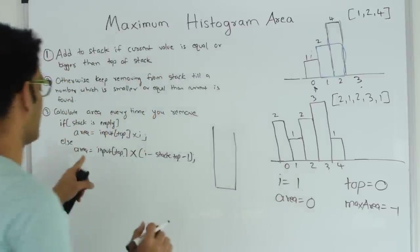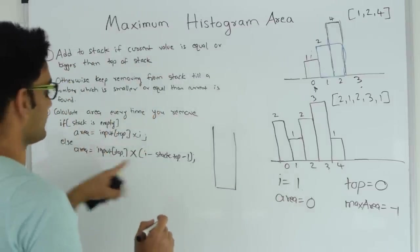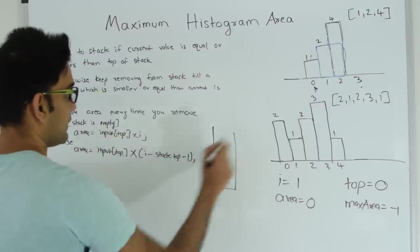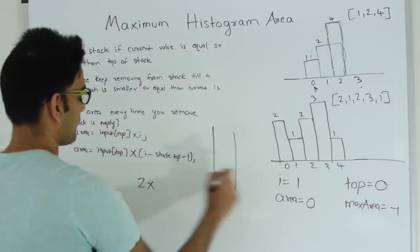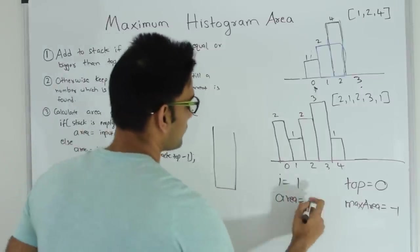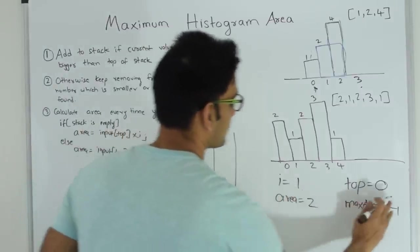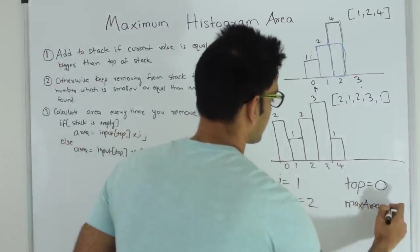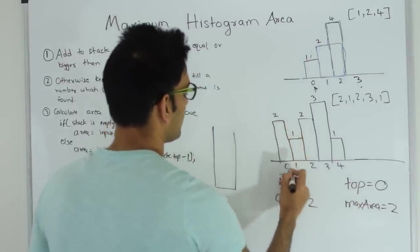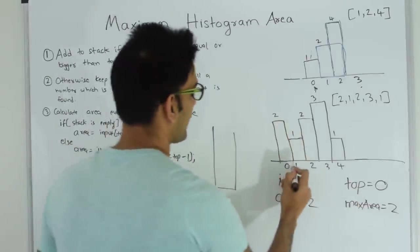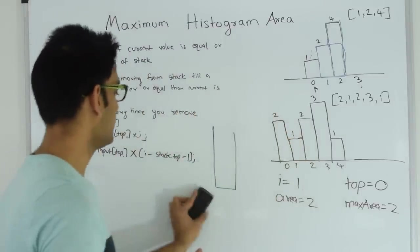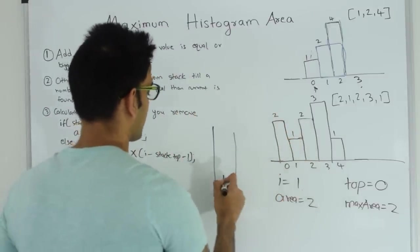Since the stack is empty, area = input[top] × i = 2 × 1 = 2. Max area becomes 2 since it was less than area. It's clear that this first bar of height 2 is contributing area 2. Then we push index 1 into the stack.